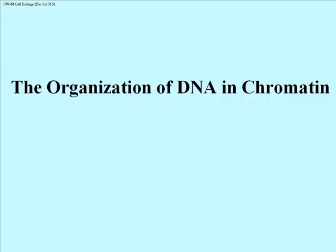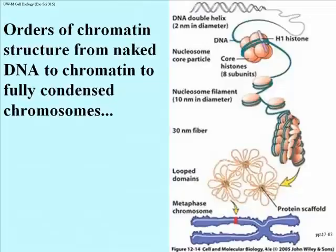Let's spend a little time talking about how DNA is organized in chromatin. In this illustration, you see several orders of structure of chromatin, starting at the top with DNA — naked DNA, double helical DNA.